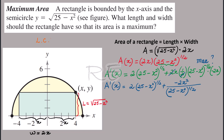The expression (25 minus x squared) to the one-half is the lowest common denominator. We are going to combine the two fractions by multiplying the first fraction by (25 minus x squared) to the one-half over (25 minus x squared) to the one-half. The common denominator is (25 minus x squared) to the one-half.